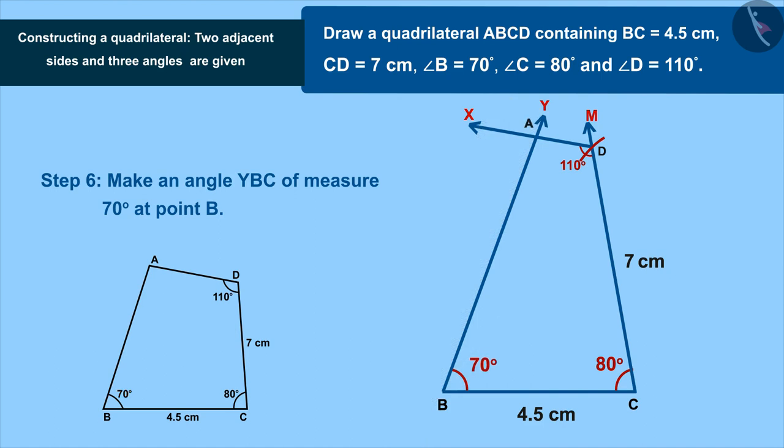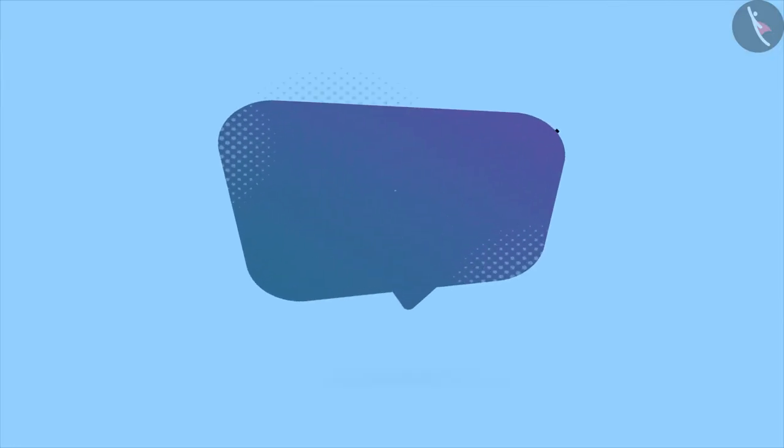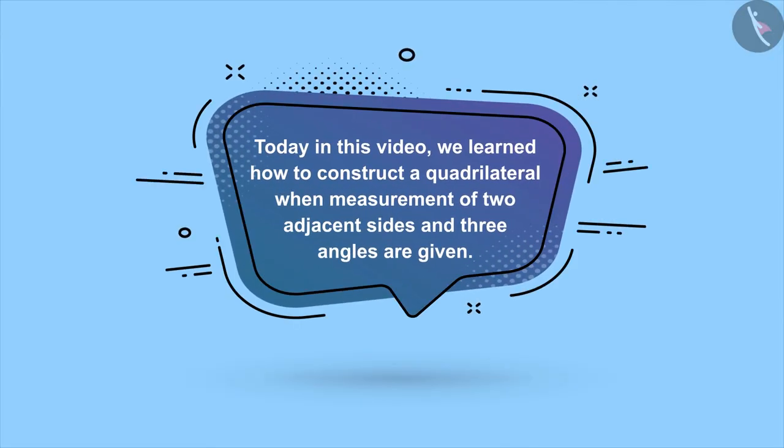In this way we have constructed quadrilateral ABCD. Today in this video we learned how to construct a quadrilateral when measurement of two adjacent sides and three angles are given. In the next video we will see some examples based on these.